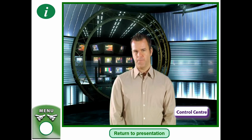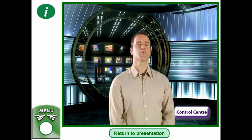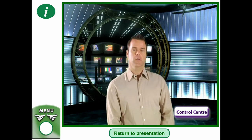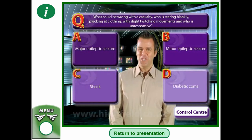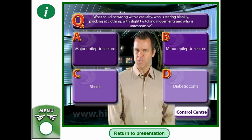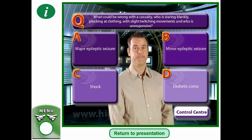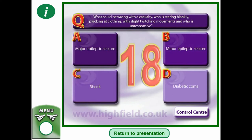Quiz question: what could be wrong with a casualty who is staring blankly, plucking at clothing, with slight twitching movements and who is unresponsive? Is it A — a major epileptic seizure, B — a minor epileptic seizure, C — shock, or D — a diabetic coma? Choose which you think is correct; pause the video if you need time.